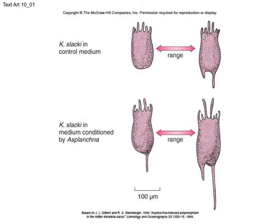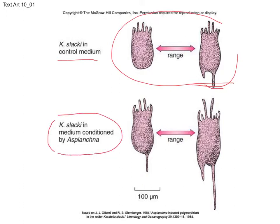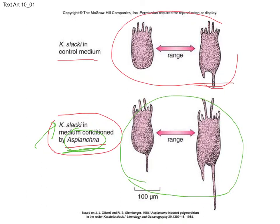Here are results of experiments where Keratella cultured in a control medium shows a complete absence of spines or short spines — there is a range of phenotypic variation. But if you culture the same species in a medium containing the predator Asplanchna — a much larger predatory rotifer — the offspring of successive generations produce much larger lateral spines.